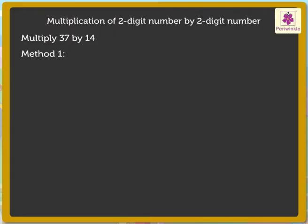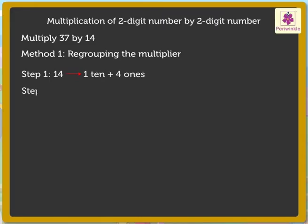The first method is by regrouping the multiplier. Step 1: Regroup 14 as 1 ten and 4 ones. Step 2: Multiply 37 by 4 ones. 7 into 4 is equal to 28. 3 into 4 is equal to 12 plus the carried over 2 is equal to 14.